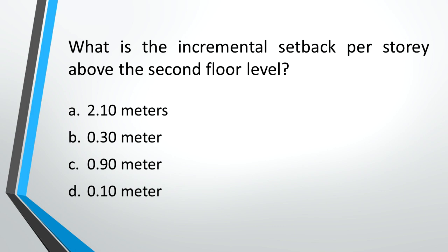What is the incremental setback per story above the second floor level? A: 2.1 meters, B: 0.3 meters, C: 0.9 meter, D: 0.1 meter. Answer: B, 0.3 meter.